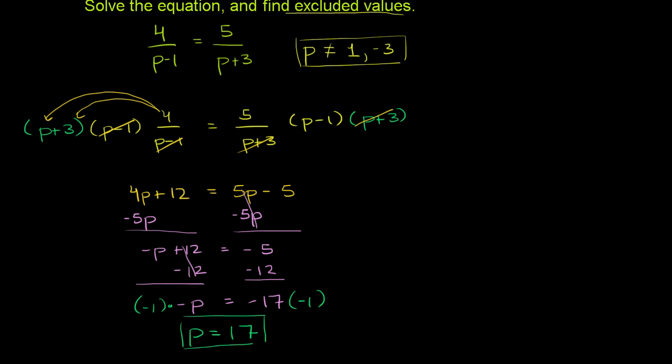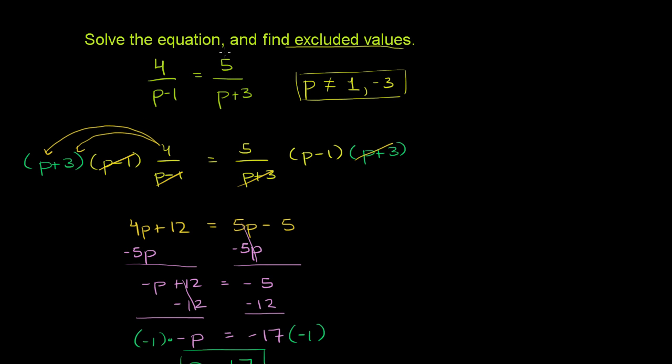And let's verify that this really works. It wasn't one of our excluded values, but just in case, let's verify that it really works. If we have p is 17, we get 4 over 17 minus 1 needs to be equal to 5 over 17 plus 3. I'm just putting 17 in for p, because that's our solution.